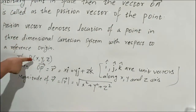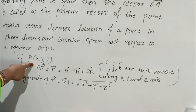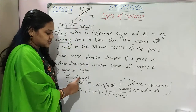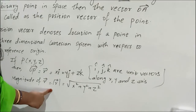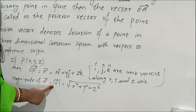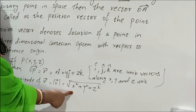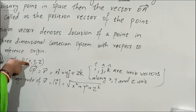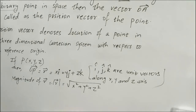X, Y, Z are the coordinates of point P — its location in space. So the magnitude of the OP vector (R vector), since vector magnitude is always positive, is: modulus of R vector equals the square root of X² plus Y² plus Z². So let's write down this — we have completed all the types of vectors.